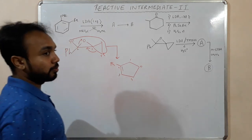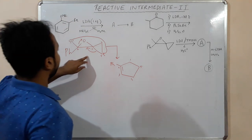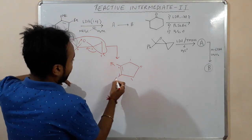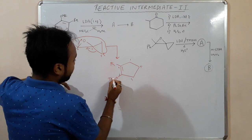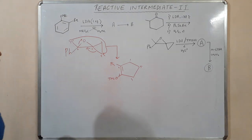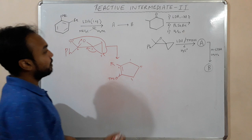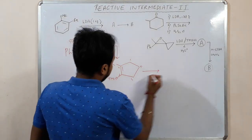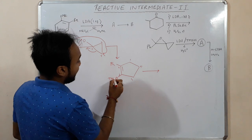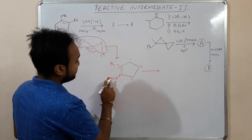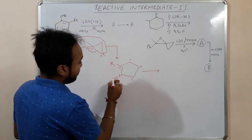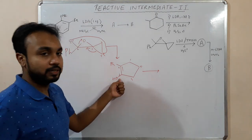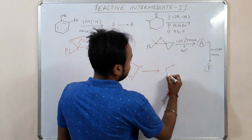The five-membered ring has a phenyl group and a double bond between C2 and C3, plus a TMS group. On hydrolysis, the TMS-protected alcohol forms a free alcohol, which undergoes keto-enol tautomerism to give a ketone.